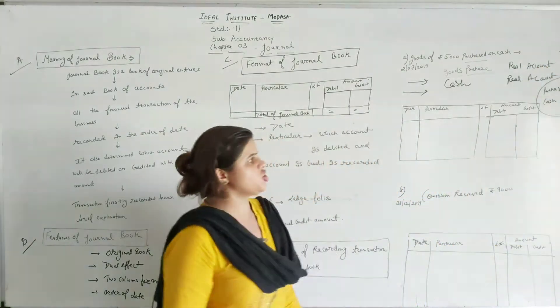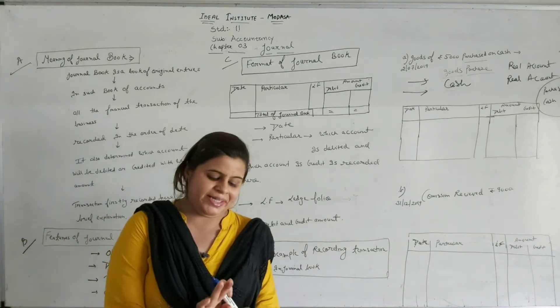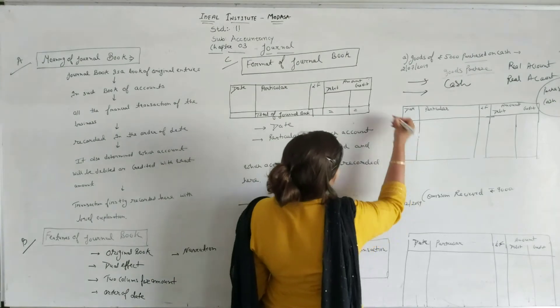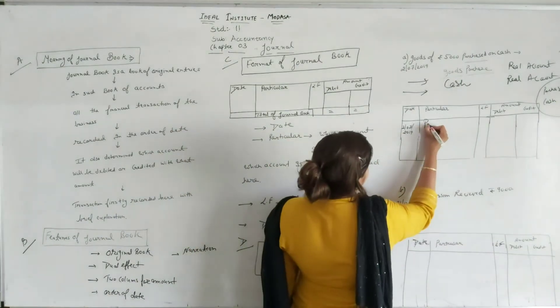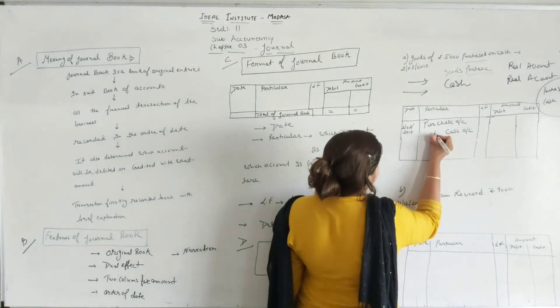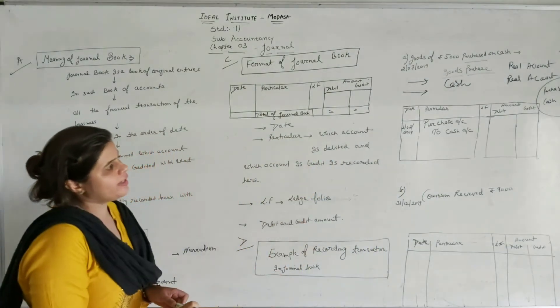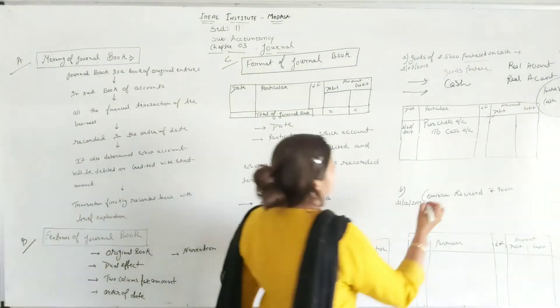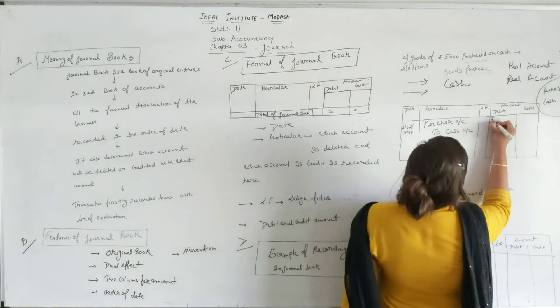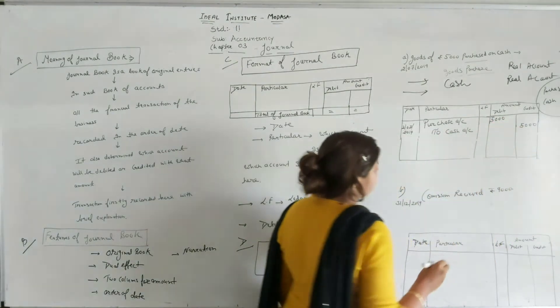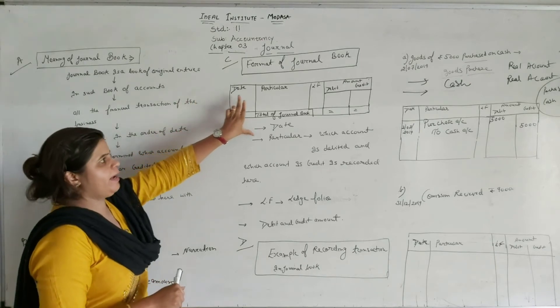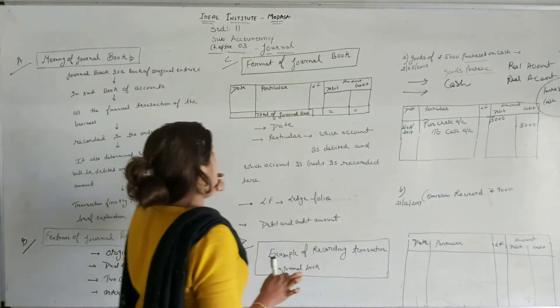When we have identified that in one transaction what to debit and what to credit, then we have to record it systematically, and first recording is in journal book. Whatever date is available in the question, mention it here. For example, 2nd July 2019 is the transaction. Now you can easily put it: particular purchase account debit, cash account credit. Always remember, when we write credit, we move two words ahead, and with a little space, as you can see, this is how you have to practice. Amount, both are similar, obviously. If I am buying goods of 5000 rupees, paying 5000 on behalf of purchase, then debit amount will be 5000, and credit amount will be 5000.